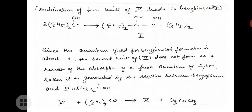The combination of two units of the fifth species, benzophenone ketyl, leads to benzpinacol. Since the quantum yield for benzpinacol formation is about one, the second unit of benzophenone ketyl does not form as a result of the absorption of a fresh quantum of light.